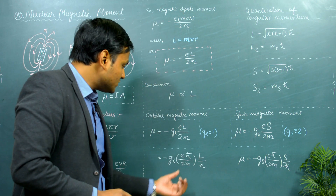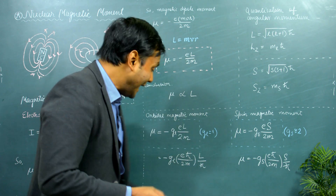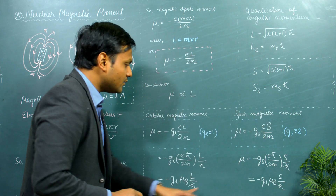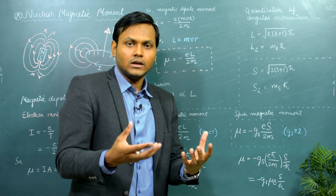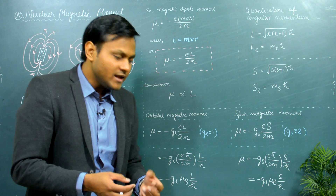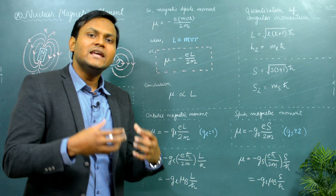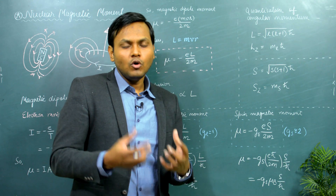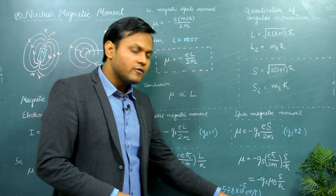This constant eℏ/2m is a very important constant known as the Bohr magneton (μ_B). So the magnetic moment of an electron, whether it is orbital or spin motion, will always come in quantized values in units of μ_B — that's why we give importance to the Bohr magneton. The Bohr magneton has a value of 5.78 × 10⁻⁵ electron volts per tesla.